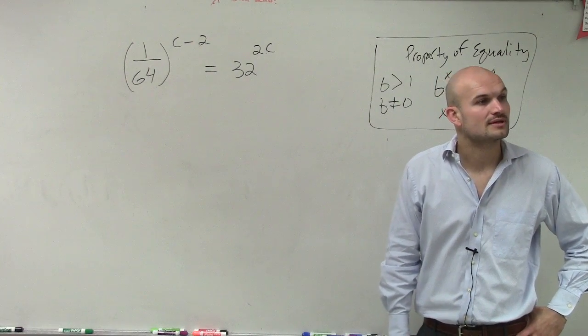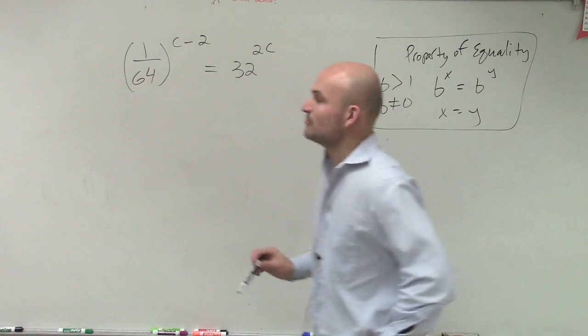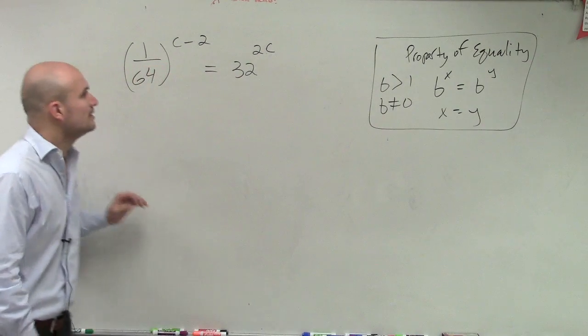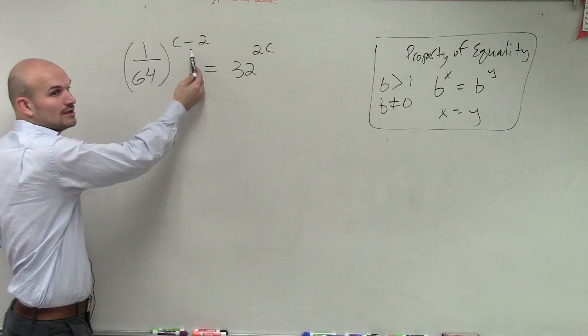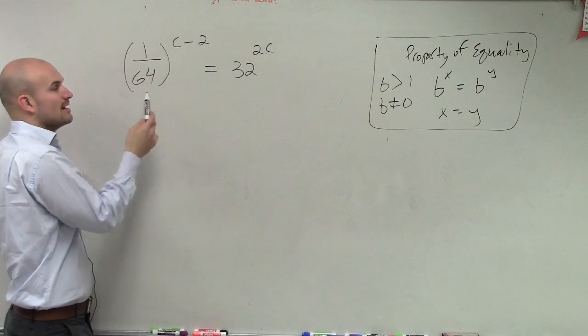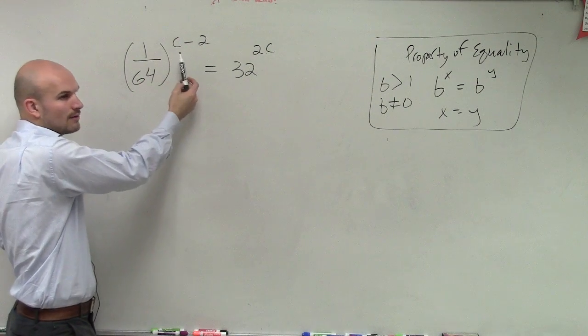Can I rewrite that by multiplying by 64? I could. But unfortunately, this 1 over 64 is being raised to a power, so it's not going to be as simple. That would actually cancel it out, but you can't cancel it out because it's being raised to a power.